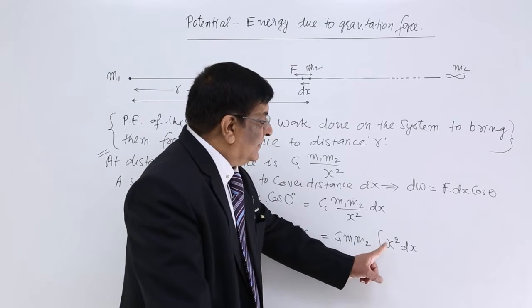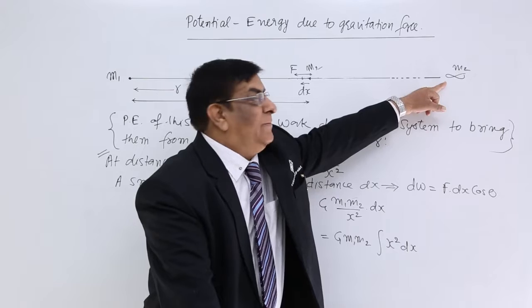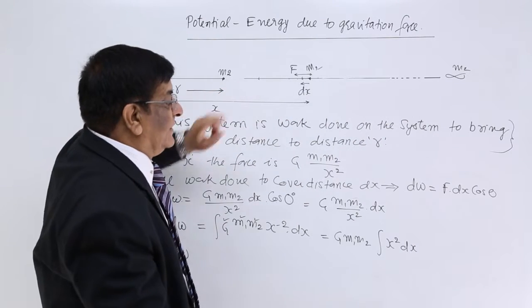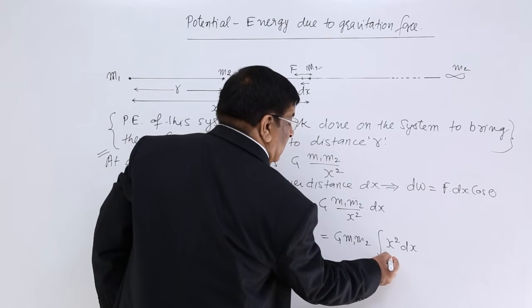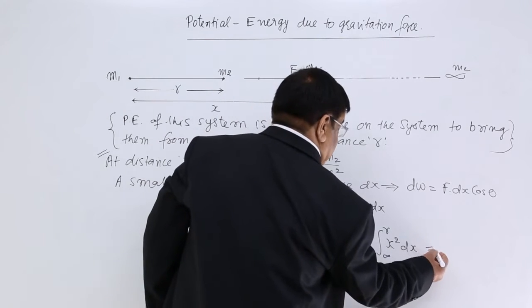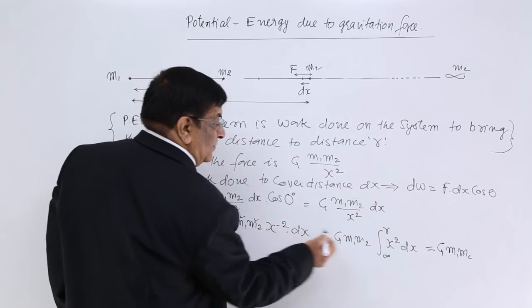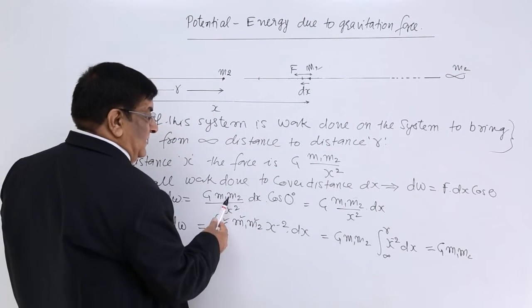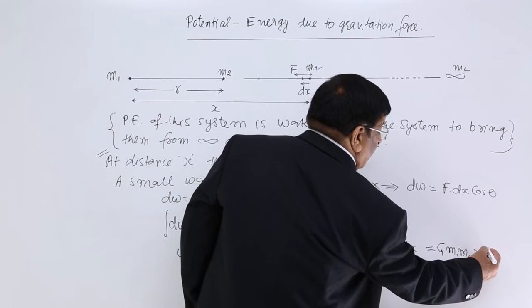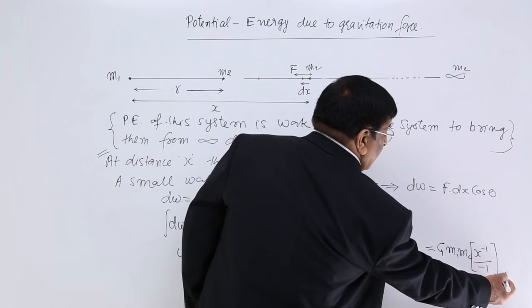What are the limits of this integration? From where should we start adding up? The value of x starts from infinity and goes up to r. So the limits are from infinity to r. This equals G m1 m2 times the integral of x to the power minus 2 dx, evaluated from infinity to r. Integrating x to the power minus 2 gives x to the power minus 1 divided by minus 1. So we have G m1 m2 times x to the power minus 1 over minus 1, with limits from infinity to r.